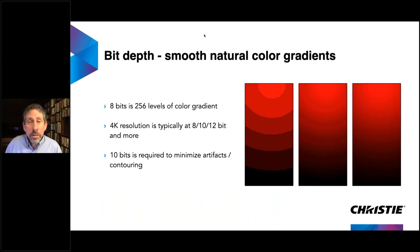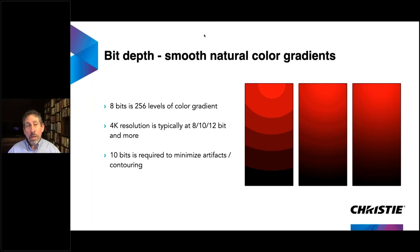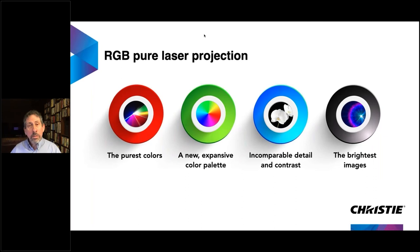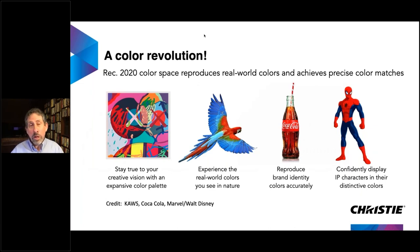Bit depth is very critical, especially as we get into higher color volume. Lower bit depth means fewer steps between values, so as you have more color to work with, you need more bits. You need at least 10 bits for a smooth gradient — less than that produces posterization or banding, as you can see in those other images. Pure RGB laser projection gives the purest, most expansive color gamut, allowing you to hit very specific IP colors like Spider-Man or Coca-Cola red.